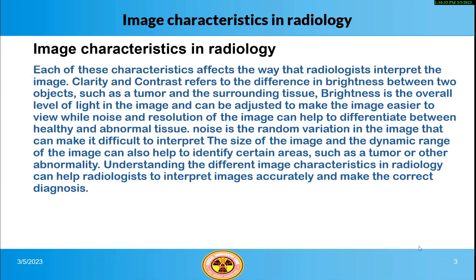Clarity and contrast refers to the difference in brightness between two objects, such as a tumor and the surrounding tissue. Brightness is the overall level of light in the image and can be adjusted to make the image easier to view, while noise and resolution can help to differentiate between healthy and abnormal tissue. Understanding the different image characteristics in radiology can help radiologists to interpret images accurately and make the correct diagnosis.